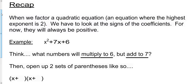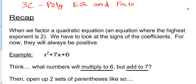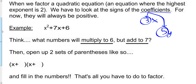We're generally doing the same stuff we've been doing. When we factor a quadratic equation, we use DFOIL and look at the signs of the coefficients — the numbers in front of the variables. We're looking for numbers that will multiply to 6 and add to 7. That's what we want to keep in mind as we're doing these types of problems.